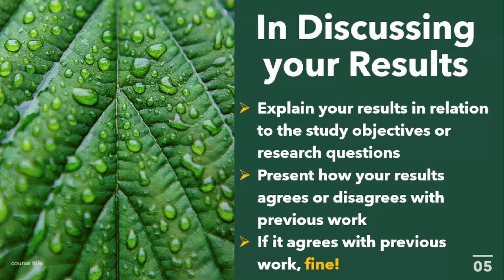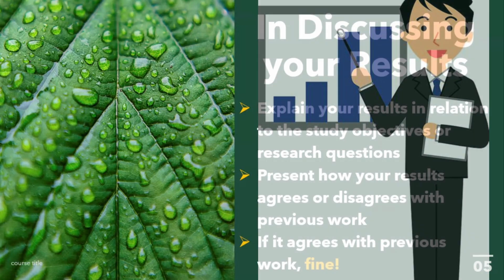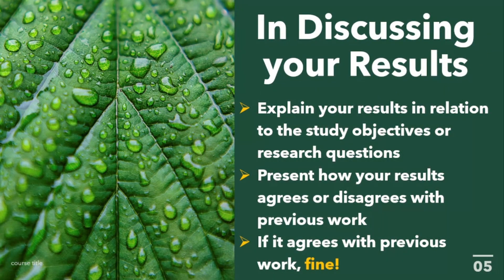In discussing your results, the first thing you need to do is explain your results in relation to the study objectives or research questions. In the results section, you simply interpret the tables — for example, stating that 75% were males and 25% were females. But in the discussion, you explain why there are more females than males in your study population and what this means for your study.